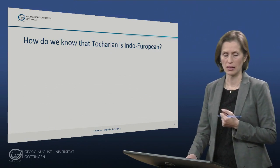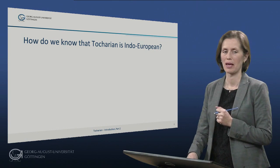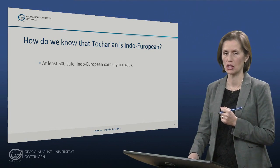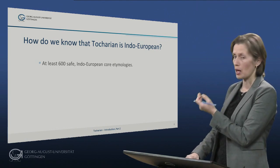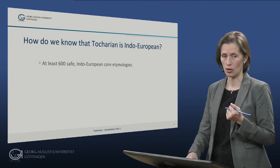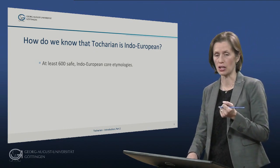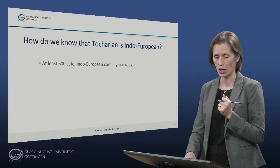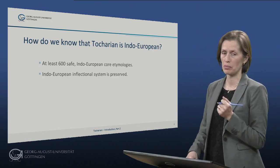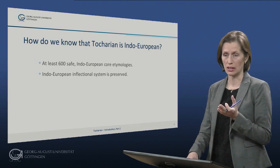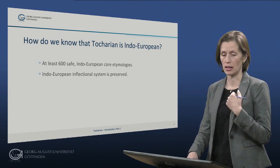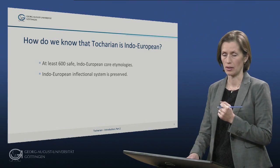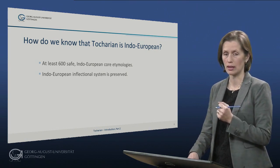How do we know that Tocharian is an Indo-European language? We have at least 600 safe Indo-European core etymologies, which include kinship terms, terms for the environment, and we even have Indo-European phraseology preserved in Tocharian. It is quite clear that Tocharian is an Indo-European language. We also have large parts of the Indo-European inflectional system, such as found in Sanskrit, Classical Greek, Latin, and so forth, preserved in Tocharian.